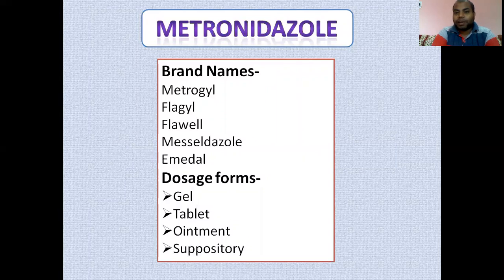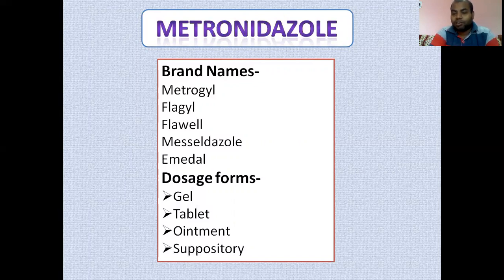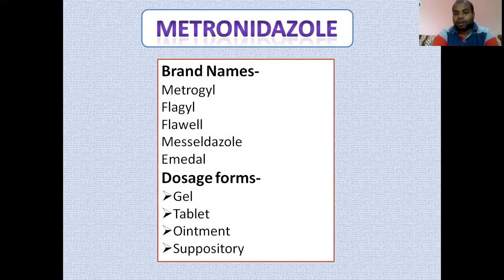In terms of classification, metronidazole is a nitroimidazole derivative. The structure contains an imidazole ring with a nitro group at the 5-position. The dosage forms available are tablet, ointment, gel, and suppository.